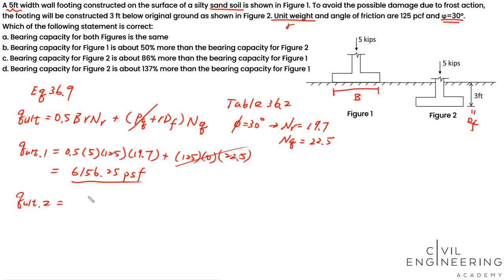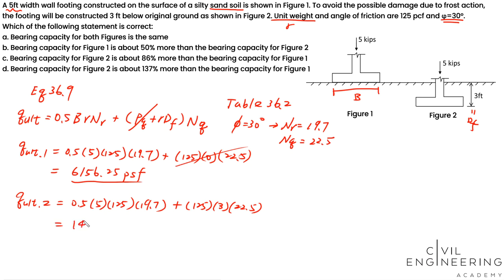For figure two, the first part of the equation is the same. The second part now includes the embedment term: 125 × 3 feet × Nq (22.5). This gives a total bearing capacity of 14,593.75 psf for figure two.